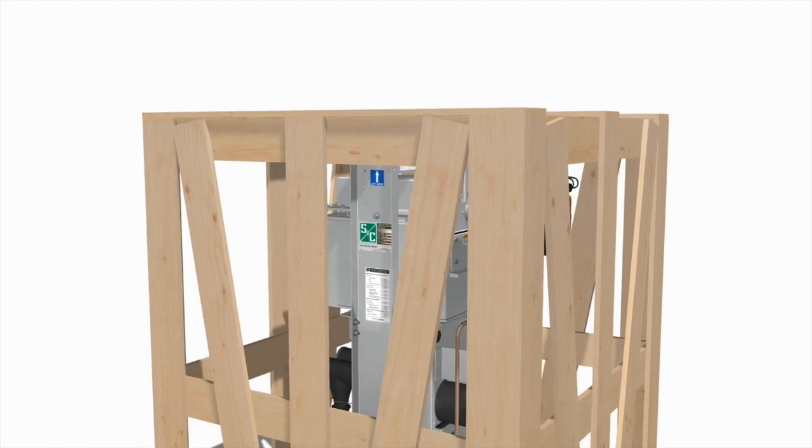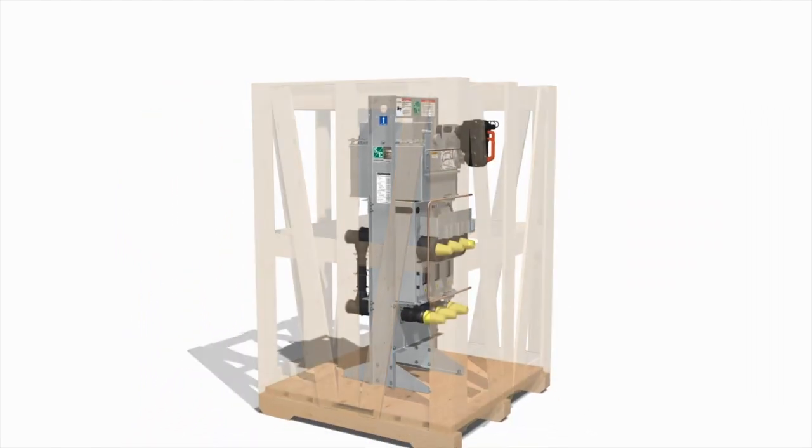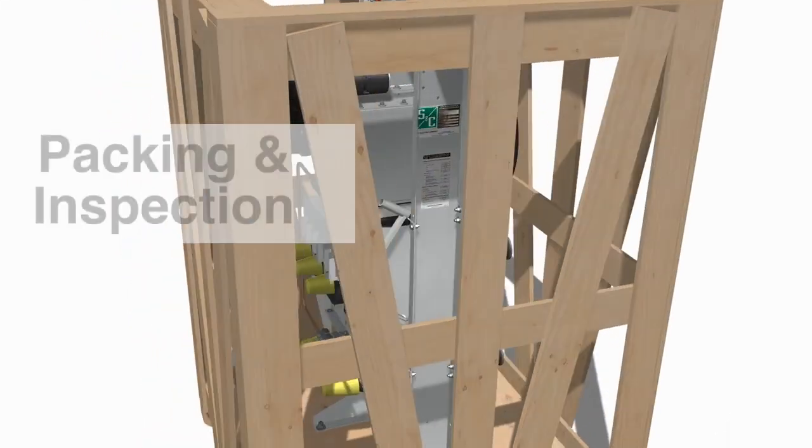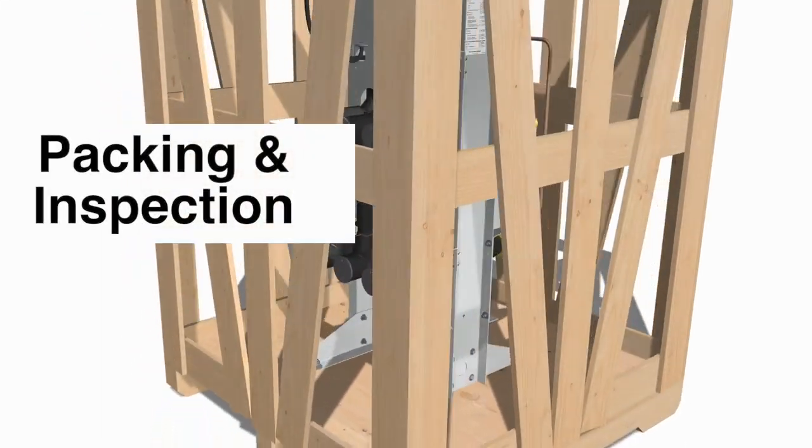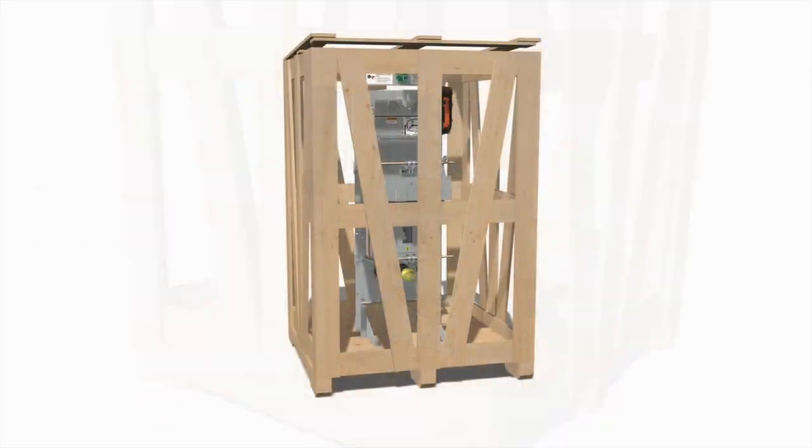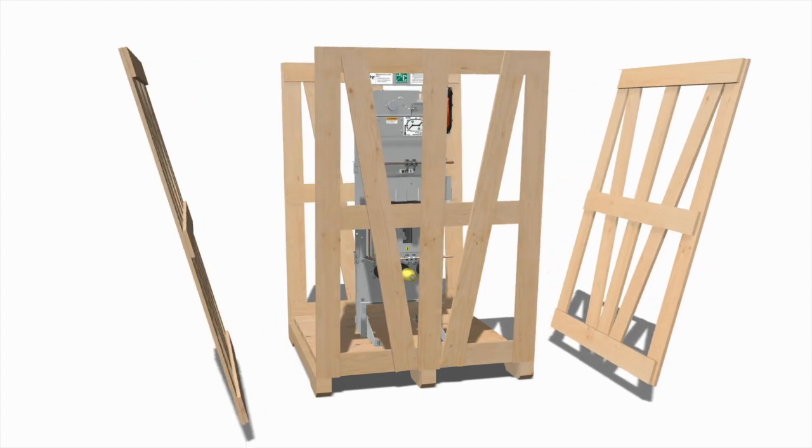Vault-mounted style S&C Vista SD Underground Distribution Switchgear is shipped in a wooden crate. Check the bill of lading to make sure all listed shipping skids, crates, and containers are present. Remove all separately packaged components, if any, shipped with the switchgear assembly.